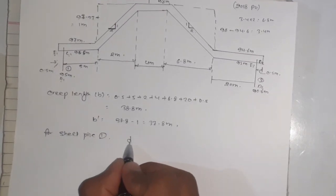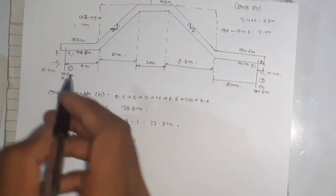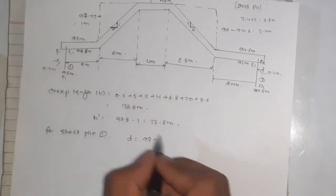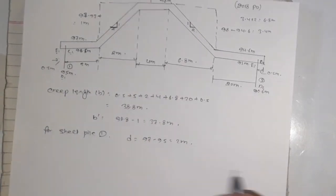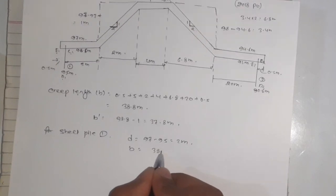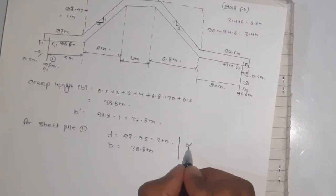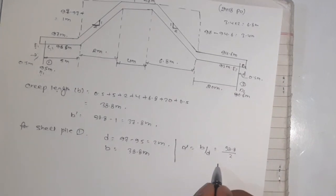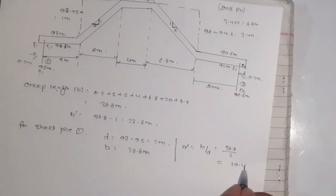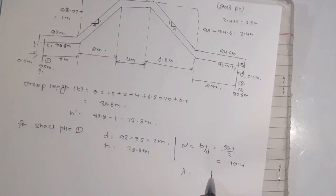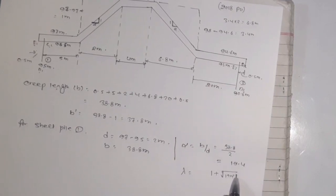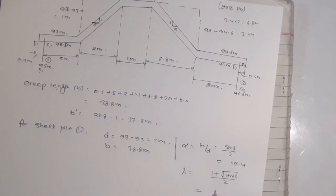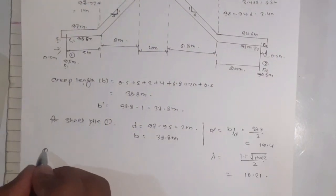I have to use this depth. So the depth is 97 minus 2m, which is 38.8m. Now B by D, so B is 38.8 upon 2, which is 19.4m. Lambda equals 1 plus root under 1 plus alpha squared divided by 2, which equals 10.21.